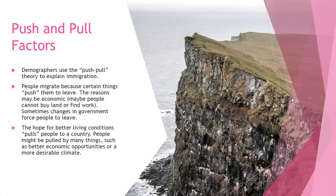Push and pull factors is one of the ways that demographers explain immigration. It's a theory that explains why people move. Push factors are things that make people leave a country — it might be that they're being persecuted for their religion, they can't find jobs, or they have a drought that causes agricultural hardship. Pull factors are those good things that pull people into a country, such as better climate, better jobs, and better education.